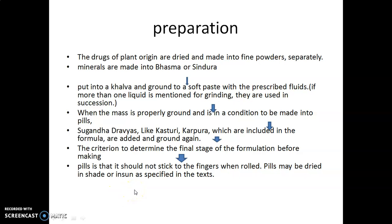However, Vati or Guttika can nowadays also be prepared by using normal tablet manufacturing or pill manufacturing instruments, with the help of compression machines and grinding machines.